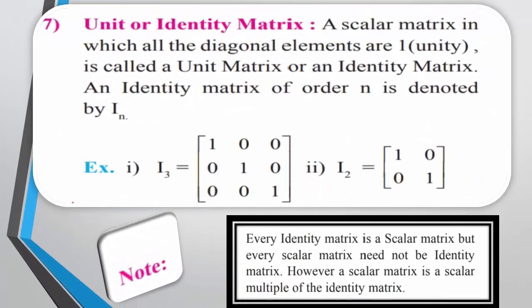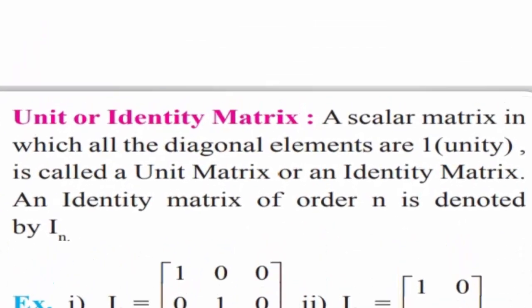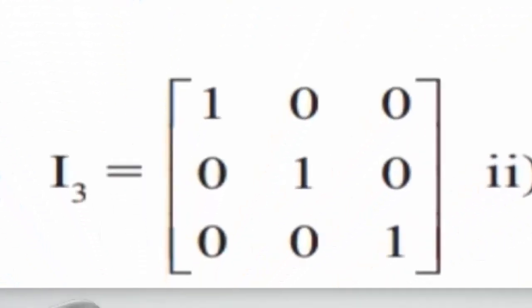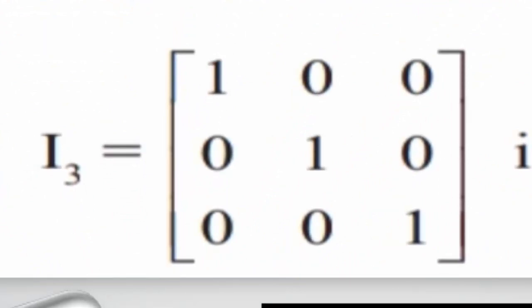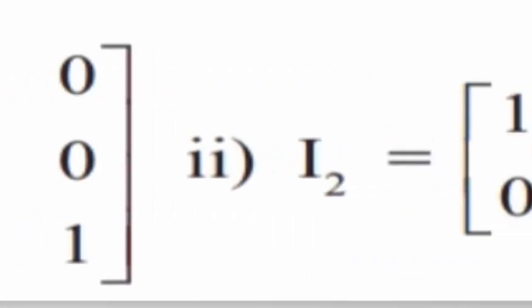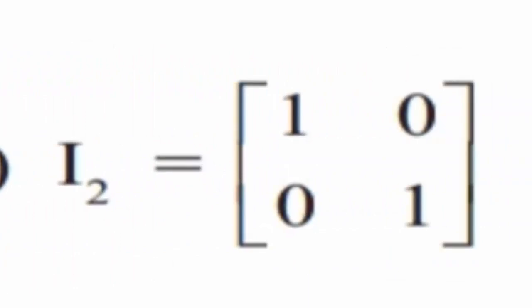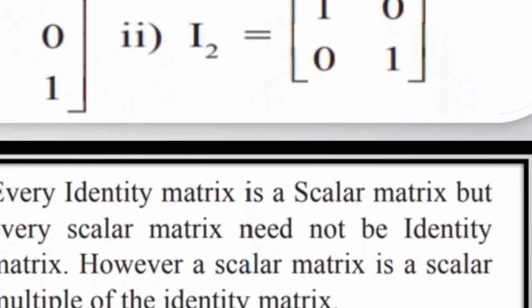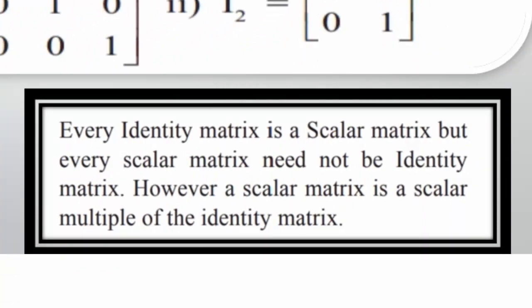Unit or Identity Matrix: A scalar matrix in which all the diagonal elements are 1 (unity) is called a unit matrix or identity matrix. An identity matrix is a square matrix of order n, also denoted by In. For example, I3 is a 3 by 3 unit matrix with all diagonal elements 1 and non-diagonal elements 0. Similarly I2 is a 2 by 2 unit matrix. An identity matrix is a scalar matrix, but every scalar matrix need not be an identity matrix. However, a scalar matrix is a scalar multiple of the identity matrix.